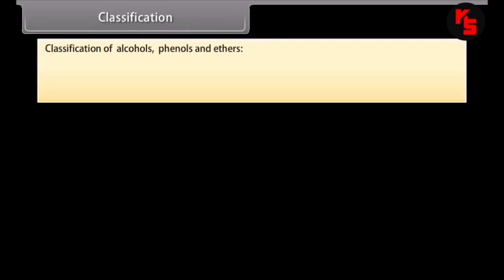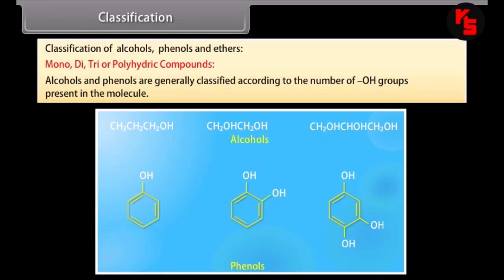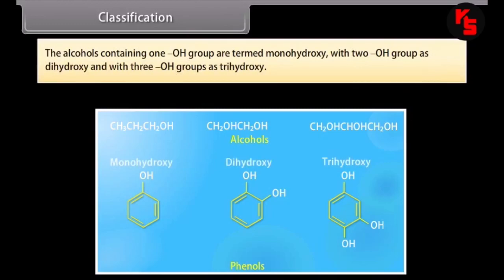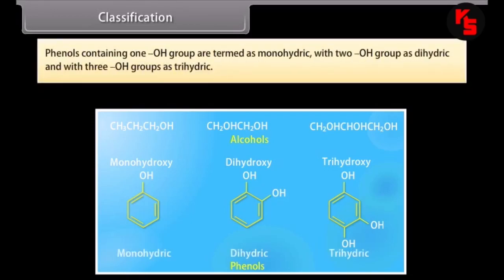Classification of alcohols, phenols and ethers: mono, di, tri or polyhydric compounds. Alcohols and phenols are generally classified according to the number of hydroxyl groups present in the molecule. Alcohols containing one hydroxyl group are termed monohydroxy, with two as dihydroxy, and three as trihydroxy. Phenols with one hydroxyl group are monohydric, with two as dihydric, and three as trihydric.